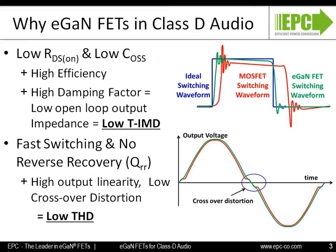There are two types of audio distortions. First, transient intermodulation distortion due to frequencies not present in the original music. TIMD is mainly due to time delays in the feedback caused by high open-loop impedance from the higher on-resistance and gate charge of silicon MOSFETs. The low on-resistance and capacitance of the eGANFETs enable high efficiency and low transient intermodulation distortion in Class-D systems.